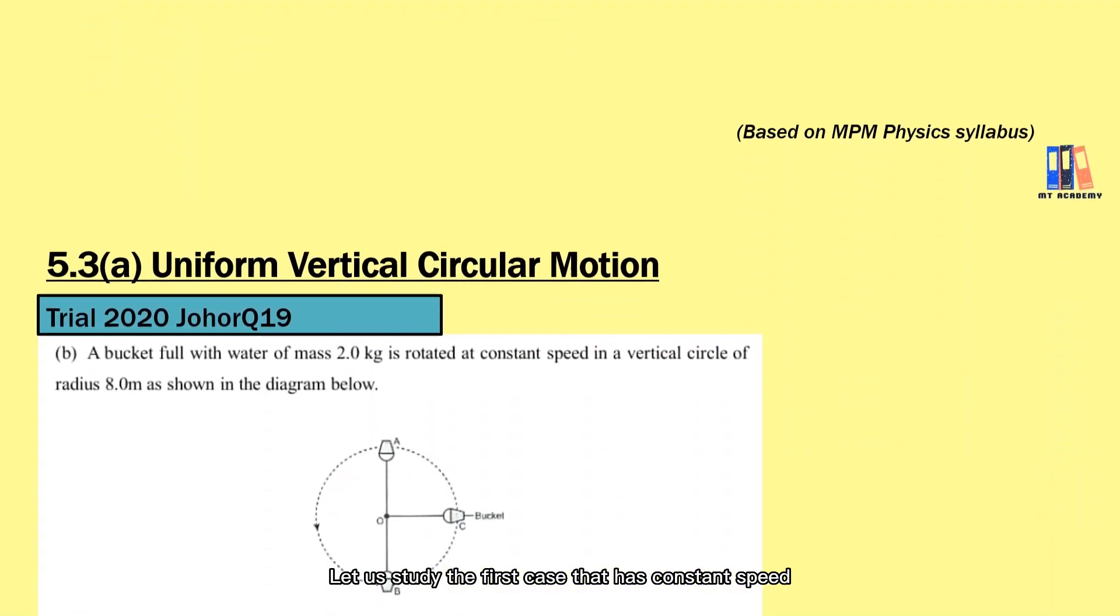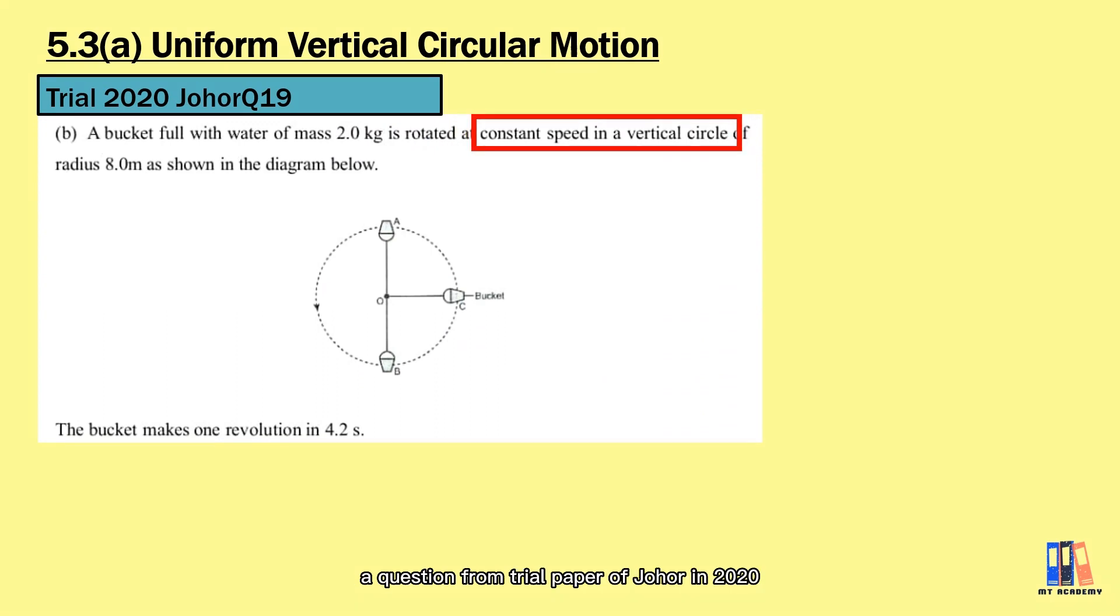Let us study the first case that has constant speed, a question from Johor in 2020. We have a bucket with water of mass 2 kg rotated at constant speed in a vertical circular path. The bucket makes one complete revolution in 4.2 seconds, and this is the period of the circular motion. Hence, we can obtain the angular velocity 2π over t equals 1.5 radians per second. And then, we can also calculate the linear speed equals 11.97 m per second.